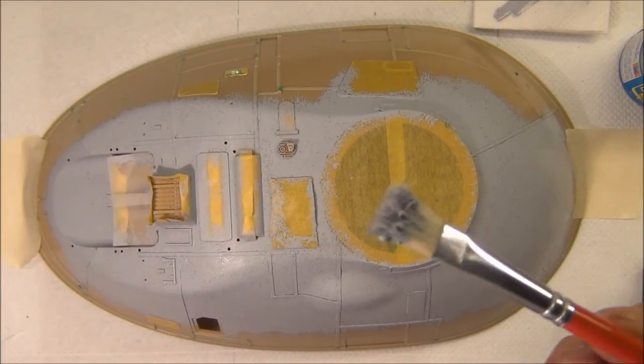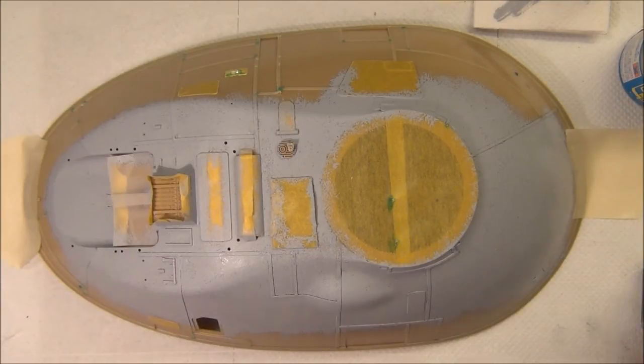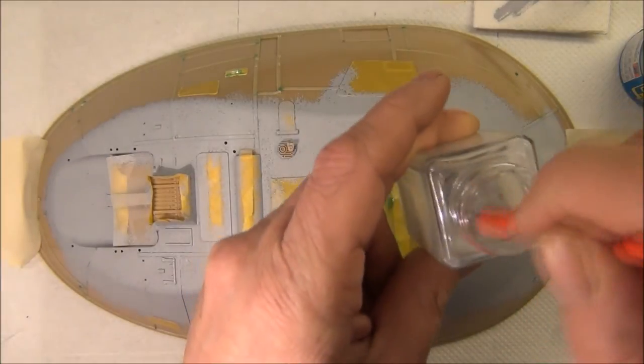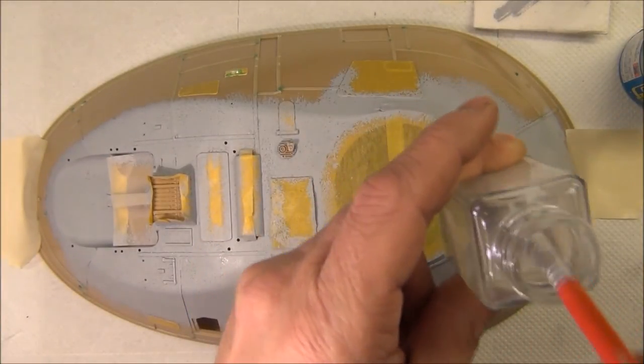Over a little time, it did gob up into the brush there as it started to dry on the brush. But it was just a matter of going into the lacquer thinner, swishing it around - cleaned it right out. I did this maybe three or four times over the course of the hull.